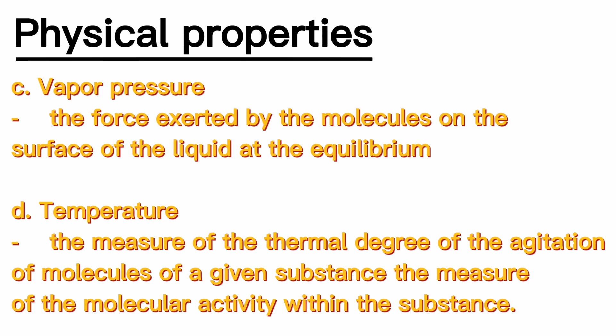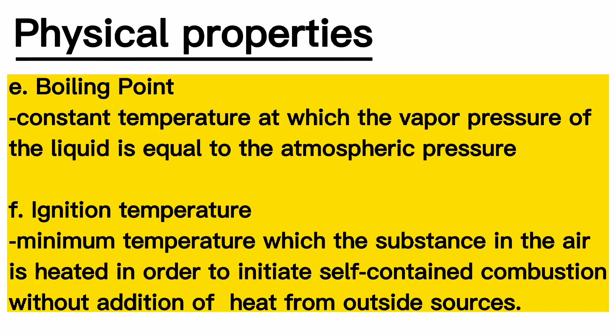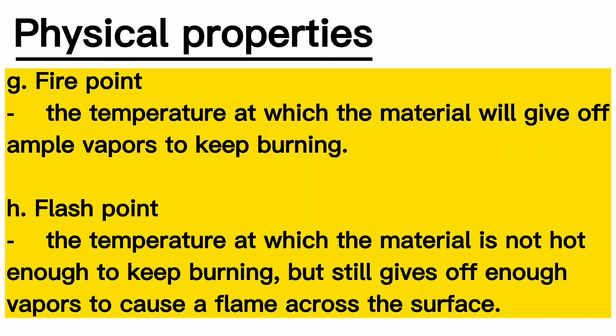E. Boiling point — the constant temperature at which the vapor pressure of the liquid is equal to the atmospheric pressure. F. Ignition temperature — the minimum temperature at which the substance in air is heated in order to initiate self-contained combustion without addition of heat from outside sources. G. Fire point — the temperature at which the material will give off ample vapors to keep burning. H. Flash point — the temperature at which the material is not hot enough to keep burning, but still gives off enough vapors to cause a flame across the surface.